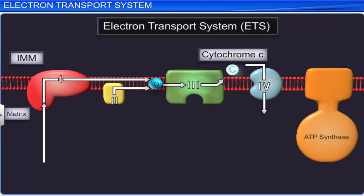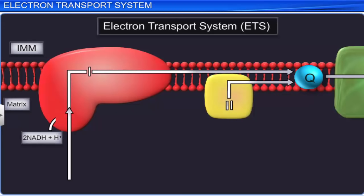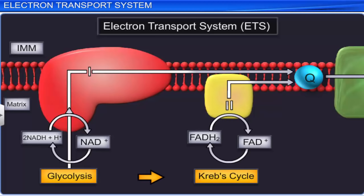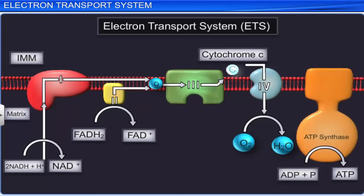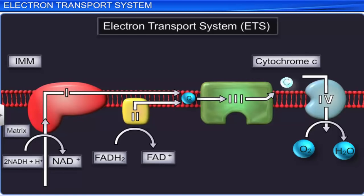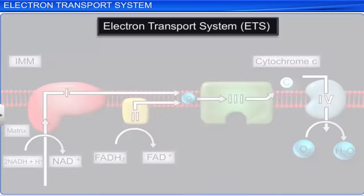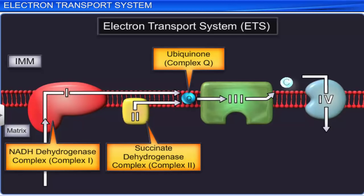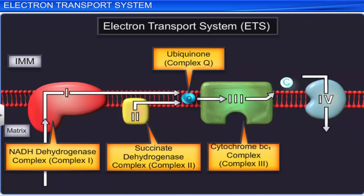ETS serves three important functions in aerobic respiration: it regenerates the oxidized form of coenzymes to be used in glycolysis and the Krebs cycle; it transports two H+ and two electrons to oxygen; and it utilizes the energy of the coenzymes in the production of ATP. ETS comprises several electron carriers that include NADH dehydrogenase complex or complex 1, ubiquinone or complex Q, succinate dehydrogenase complex or complex 2, and cytochrome BC1 complex or complex 3.